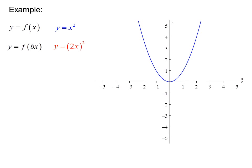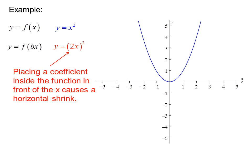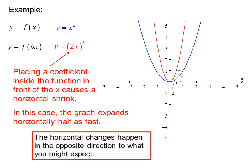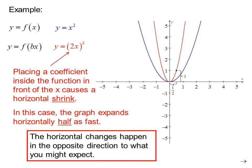This time I've added a constant inside the parentheses. Placing a coefficient inside the function in front of the X causes a horizontal shrink. In this case, the graph expands horizontally half as fast. So instead of going over 1 up 1, I go over one-half and up 1, ending up with a thinner parabola. The horizontal change happens in the opposite direction to what you might expect: putting a 2 in front makes it half as wide, while putting a one-half in front would make it twice as wide.